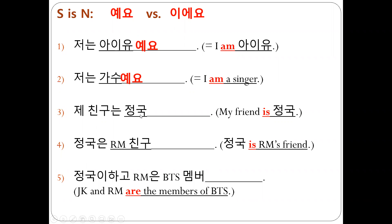제 친구는 정국 정국, 기억 ends with 컨트넌스 이에요. 정국은 RM 친구 친구도 last level ends with 우 사운드 소 예요. 정국이 하고 RM은 BTS 멤버 멤버 ends with 파워 우 사운드 소 멤버 예요. 괜찮습니까? 오케이 여기까지 감사합니다. Thank you.